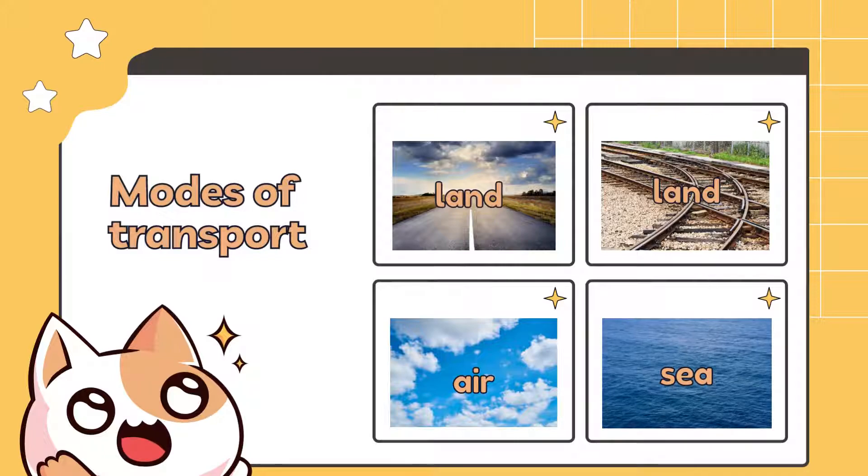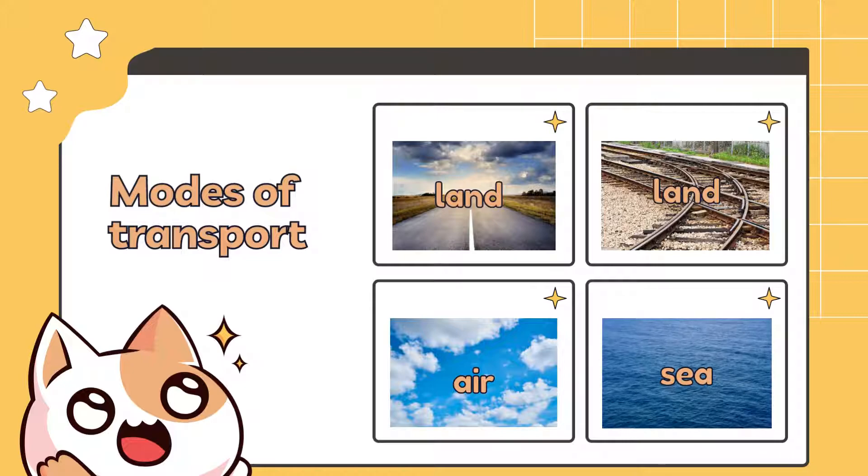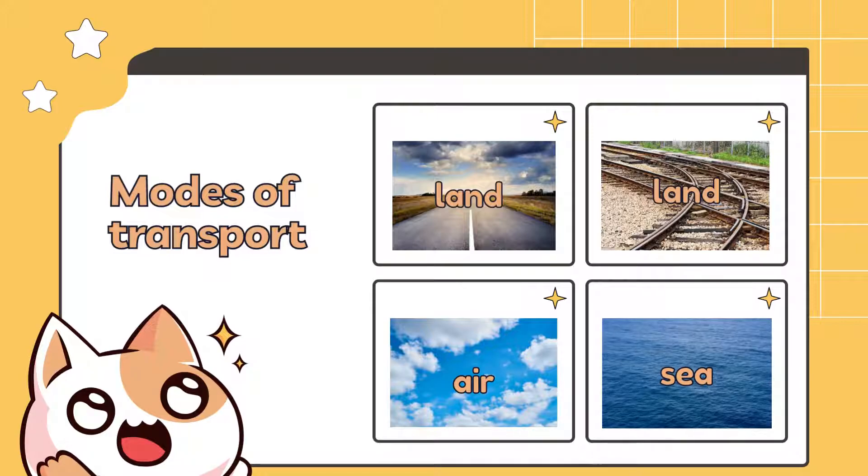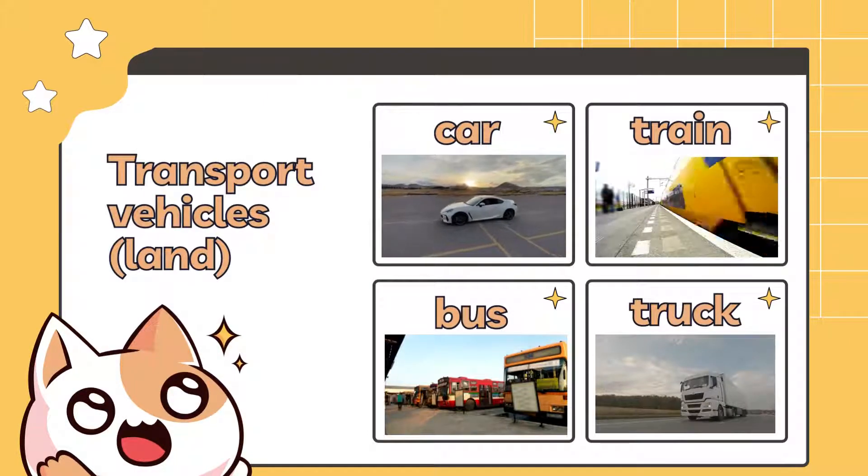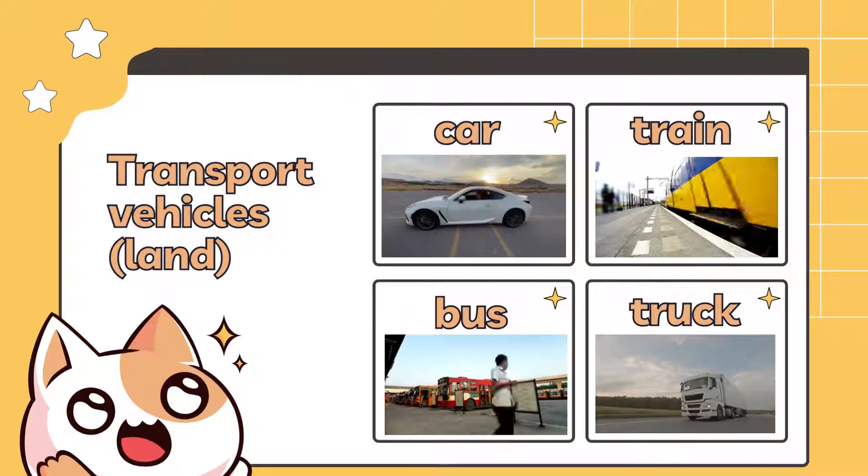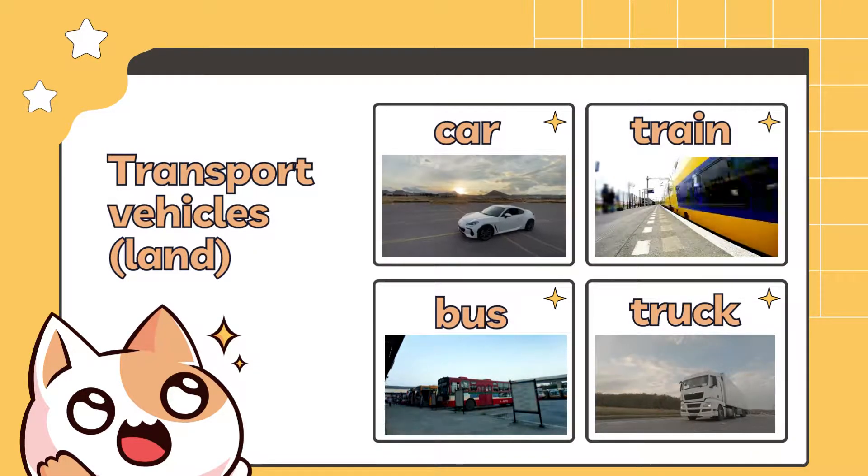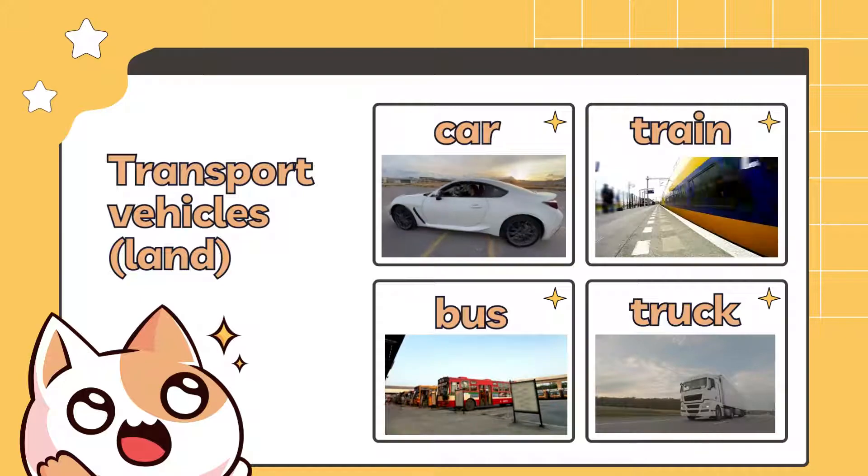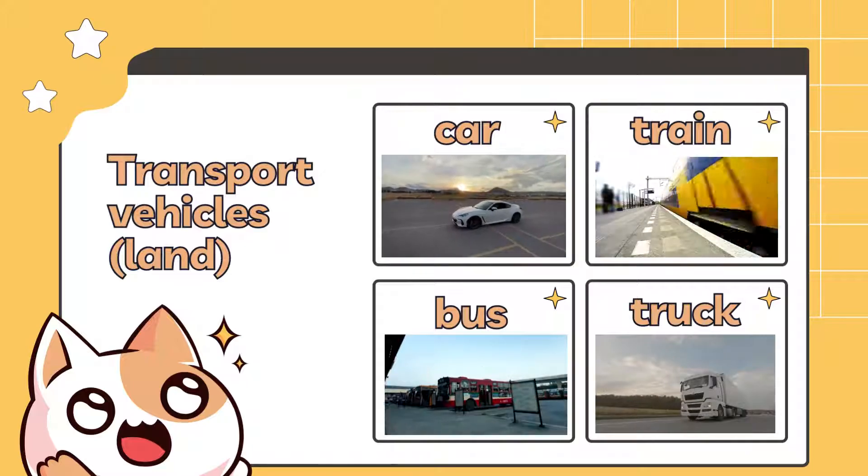The modes of transport we'll cover. Well, there's two types of land: on the road and on the rails. So the first vehicles that we see on land is car, train, bus, truck.